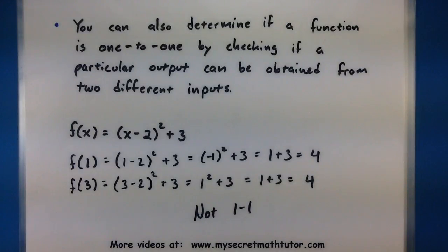So that doesn't necessarily help as much with finding one to one functions, but it is a great way you can test if something is not one to one. So remember the key here with determining if something is one to one is really by looking at inputs and outputs and figuring out if every input goes to a unique output.